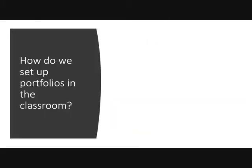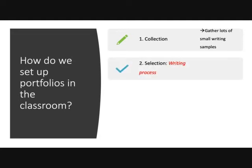How do we set portfolios up in the classroom? There are four main steps, and each one of them rhymes. Step one: collection. We gather lots and lots of small writing samples from the students. Once we have a lot of samples, we select them — so we have collection and selection. Select your best one piece, or your best three pieces, or your best five pieces, or the most improved — you decide. Choose what to submit for evaluation.